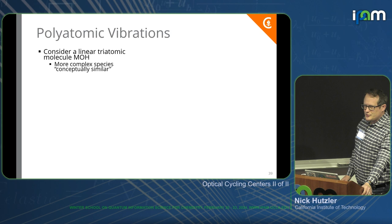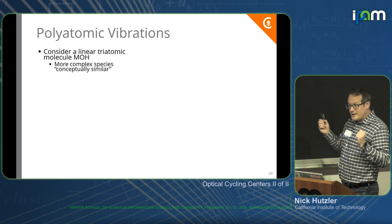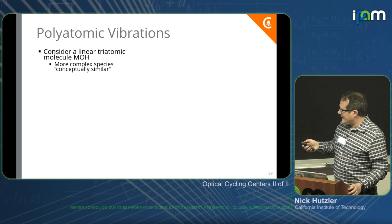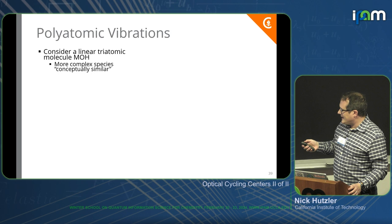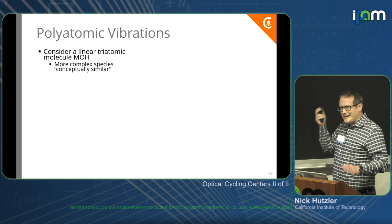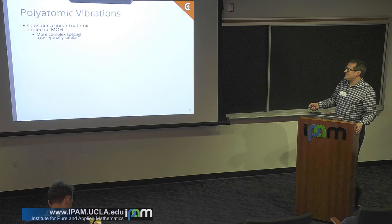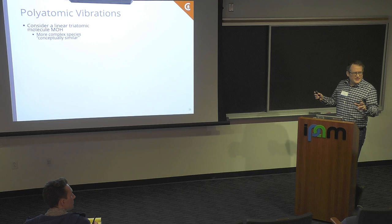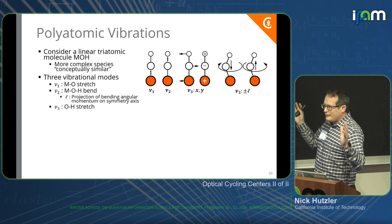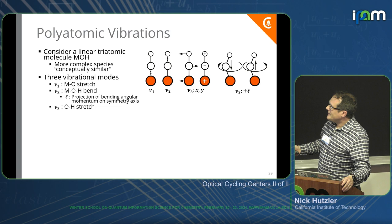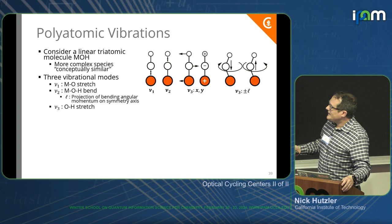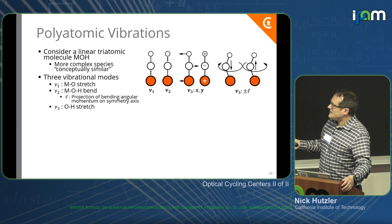The primary difference between diatomic and polyatomic molecules is that polyatomic molecules have multiple vibrational degrees of freedom, whereas diatomics have one. I will talk mostly about linear triatomic molecules of the type MOH, where M is a metal like calcium or strontium — basically the OH analog of these fluorides I've talked about, which are linear in their ground state. They have three vibrational modes, which we label nu1, nu2, and nu3, or V1, V2, V3.